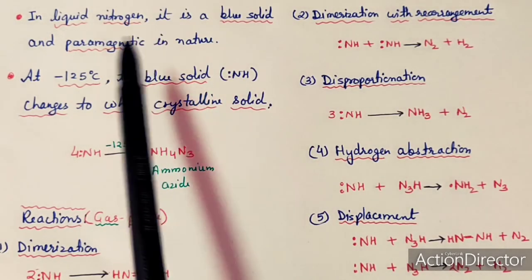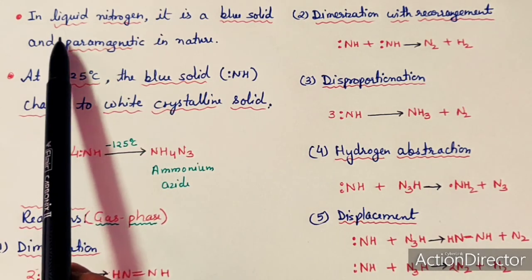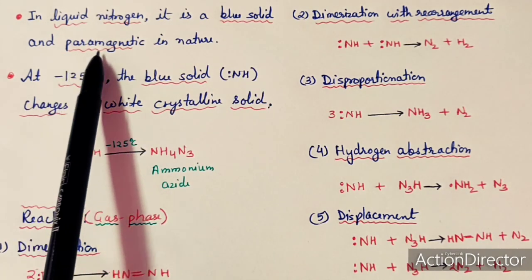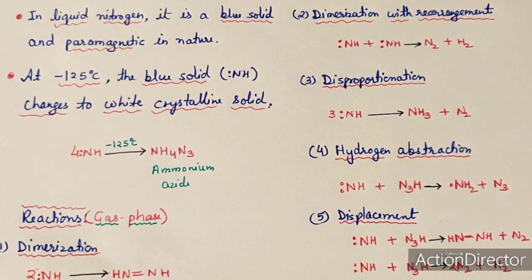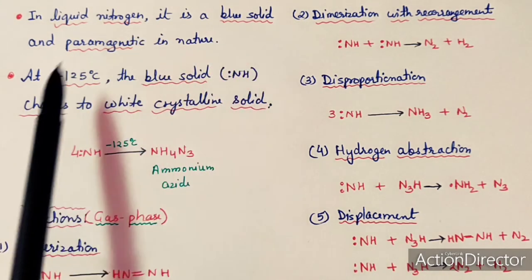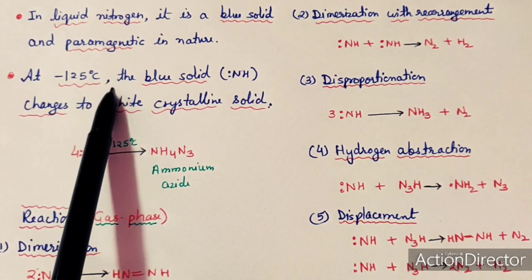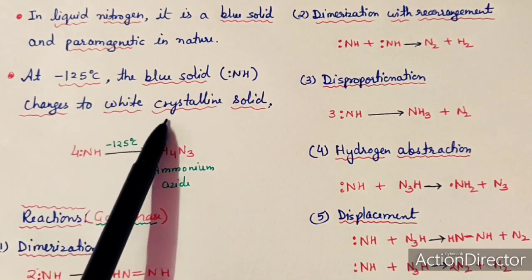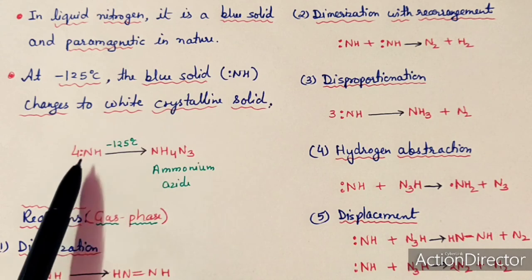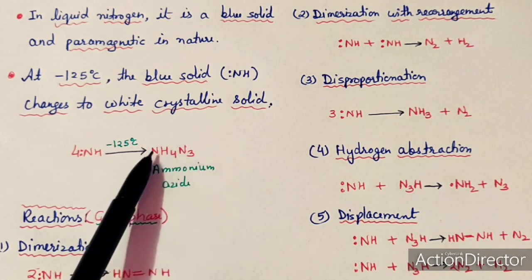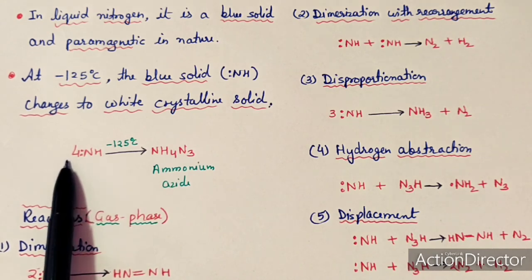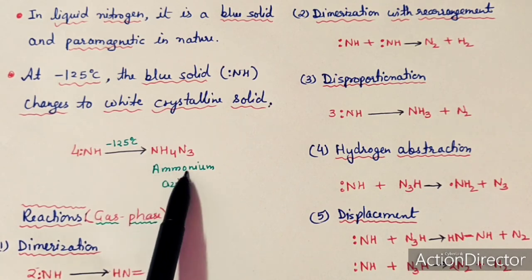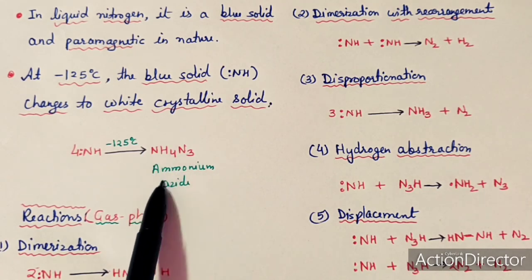Regarding the properties of imine free radical: in liquid nitrogen it is a blue solid and it is paramagnetic in nature. But at minus 125 degrees centigrade, the blue solid of imine radical changes to a white crystalline solid. This white crystalline solid is ammonium azide — it is so unstable that even at minus 125 degrees centigrade it converts into ammonium azide.